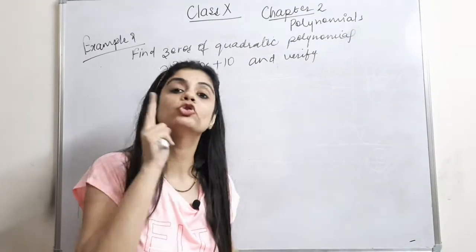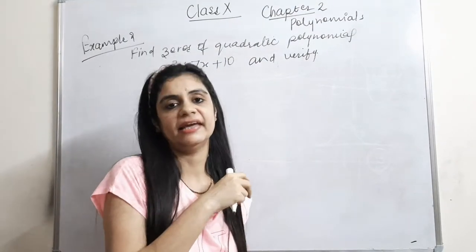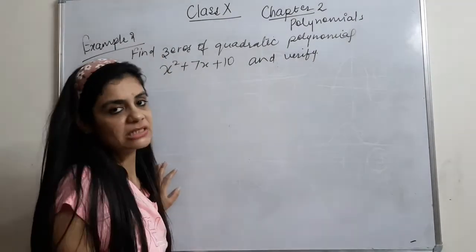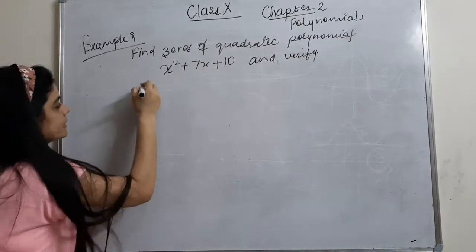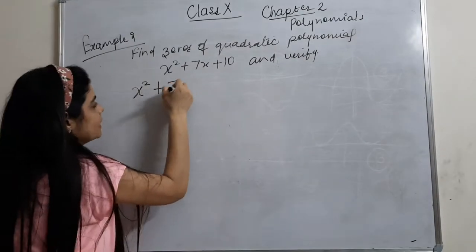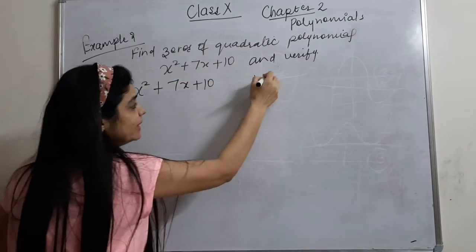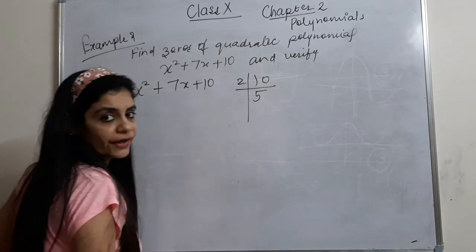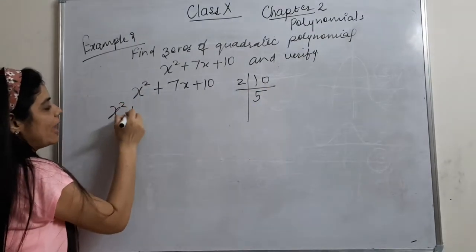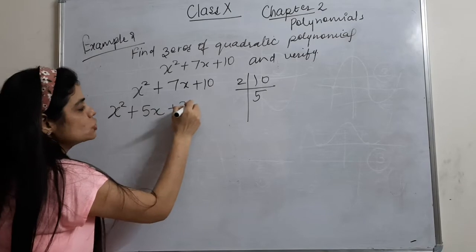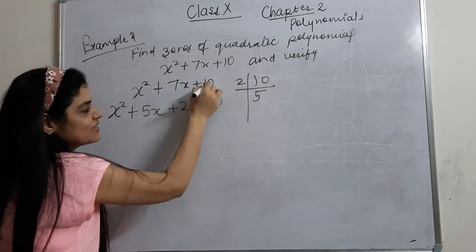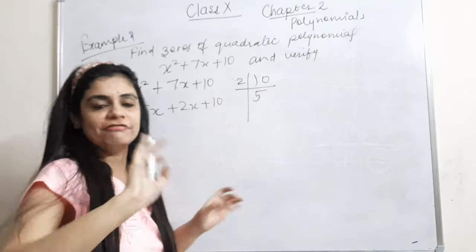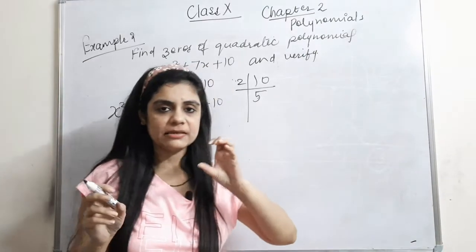For x² + 7x + 10, we need to find zeros. The first method we are using is splitting the middle term. The factors of 10 are 2 and 5. So we write x² + 5x + 2x + 10, since 2×5 = 10 and 2+5 = 7.